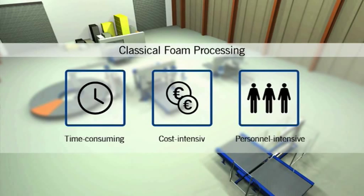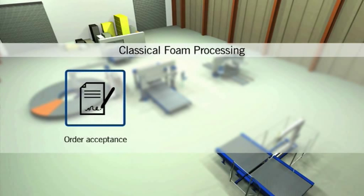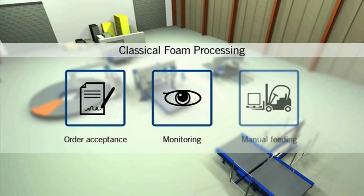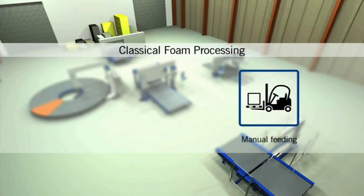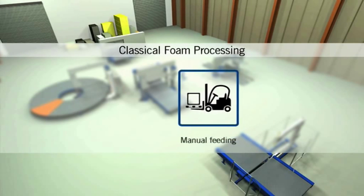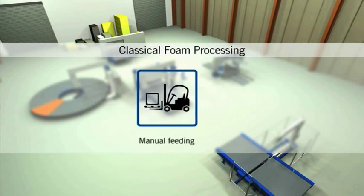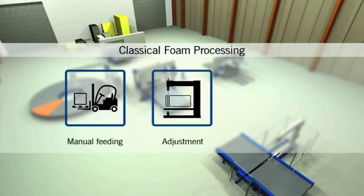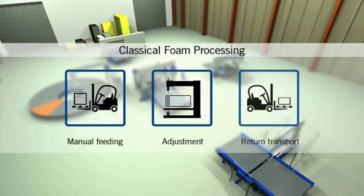Once an order is received it has to be processed in production planning. Checks are made to establish where the material is available, and the foam is fed manually onto the block trimming machine. The block has to be carried to one or more machines for pre-fabrication, yet again manually. The appropriate program has to be loaded separately on each machine, and the leftover section of block is taken back to the warehouse.